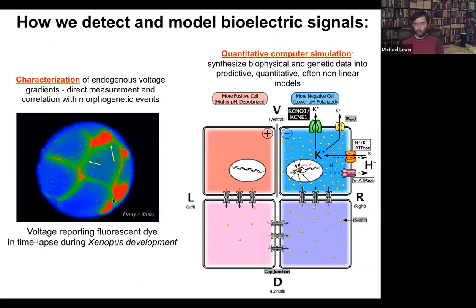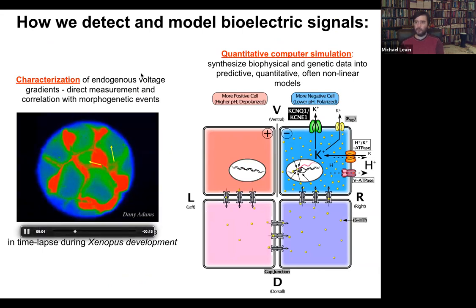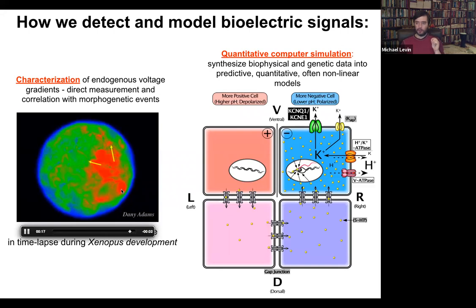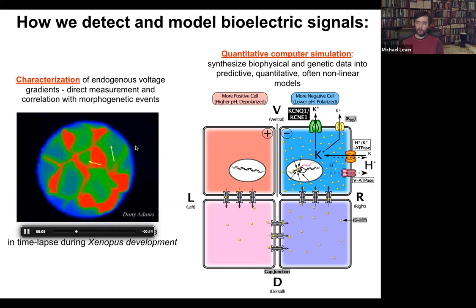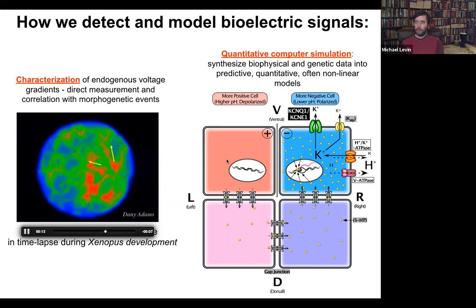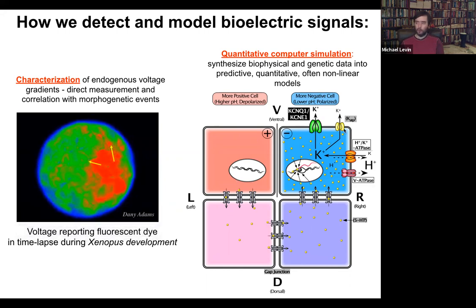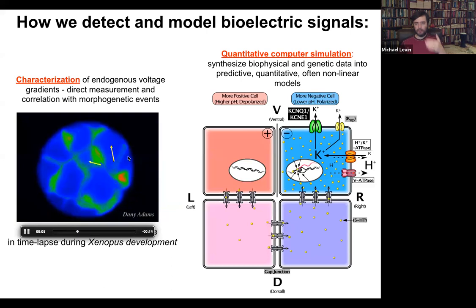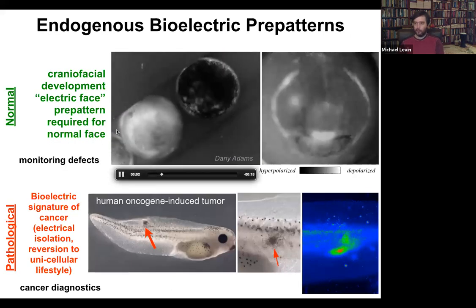We developed some tools to study this. The first is just how to detect and model bioelectric patterns. This is a voltage-sensitive fluorescent dye which reveals in the living state, non-invasively — without poking cells with electrophysiological tools — every cell reporting around its membrane all the voltages. This is an early frog embryo in time-lapse sorting out which cells are going to be left and right, dorsal, ventral, and so on. In addition to that, we do a lot of computational modeling — if we know what ion channels and pumps are in the membrane, can we explain why the voltage is the way it is and why it changes as a function of time?